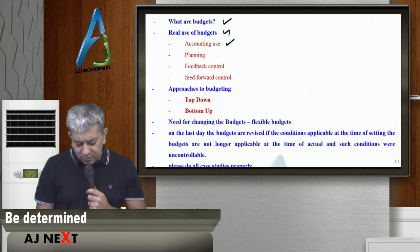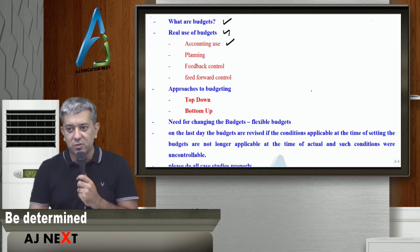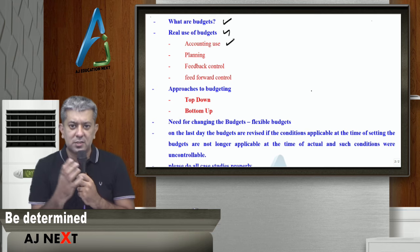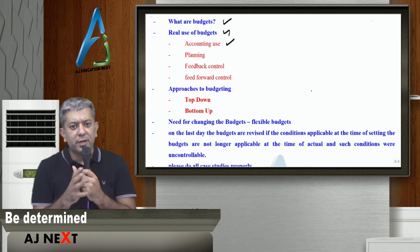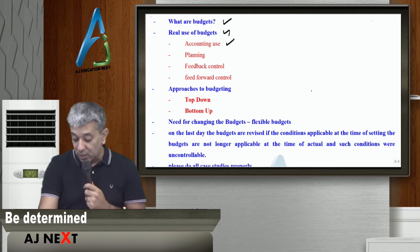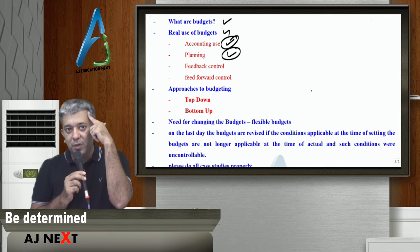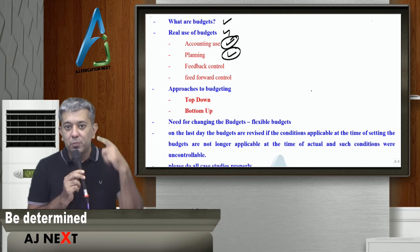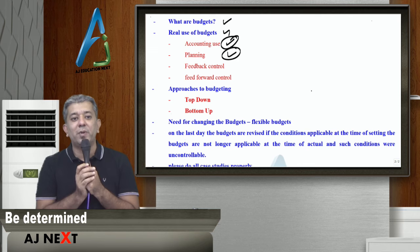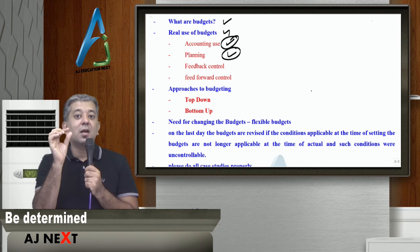Why does a company make budgets? One is accounting use — you present your accounts to lenders, banks, etc. If you go to a bank for a project loan, the bank will ask you to prepare an approximate profit and loss account and balance sheet for the next 5 years. Second is planning — it helps you plan. You can keep everything in your head, but we all know we forget. So it's important to write things down: how much sales, how much production, how many machines are needed.